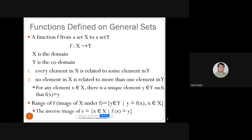So what exactly is a function? A function is defined from a set X called the domain to a set Y called the codomain. There are two requirements: first, every element in X is related to some element in Y, so F(x) equals some element in Y. Second, no element in X is related to more than one element in Y — for every x in domain X there is a unique y in codomain Y such that F(x) = y.